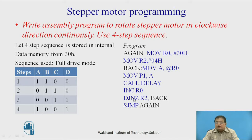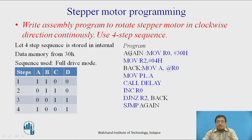Wait for some time, then go to the next sequence by incrementing R0. Check how many sequences have been transferred by decrementing R2. If R2 is not equal to zero, jump back, load the accumulator with the next sequence, send to port 1, wait for some time, and go to the next sequence. When R2 is zero, all four sequences have been transferred. Then start from the beginning again, repeating so that the motor rotates continuously.